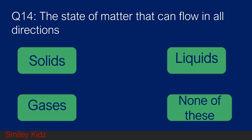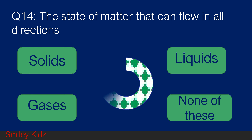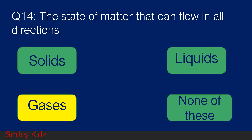Question number 14. The state of matter that can flow in all directions. Option A solids, option B liquids, option C gases, and option D none of these. Your time starts now. And your time is up. The right answer is gases. The state of matter that can flow in all directions is gases.